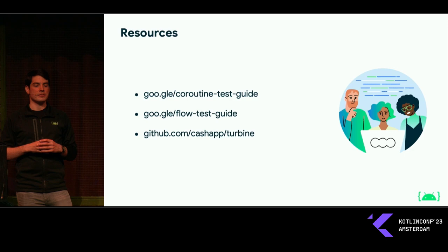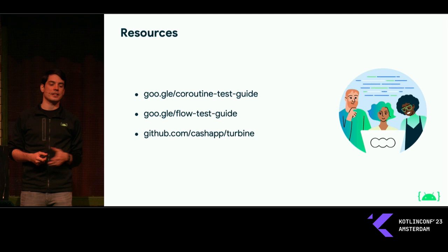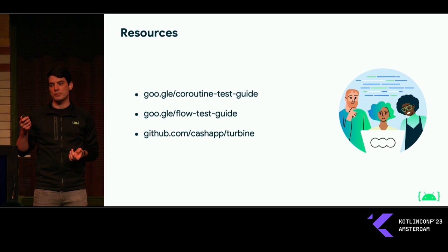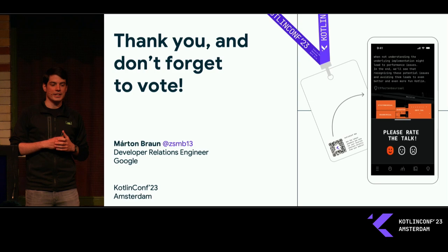Here are some resources: we have a coroutine testing guide and a flow testing guide in the Android documentation, which includes all of this and a lot more. So check that out. And again, if you're working on flows, consider using the Turbine library for that.